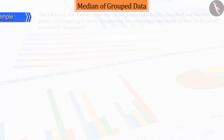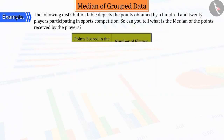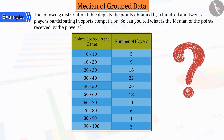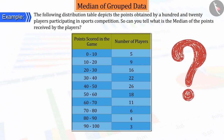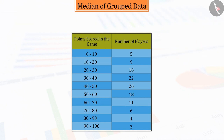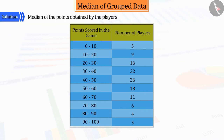The following distribution table depicts the points obtained by 120 players participating in a sports competition. Can you tell what is the median of the points received by the players? Let's see.